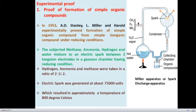What they did was very interesting. They simply exposed a mixture of methane, ammonia, hydrogen, and water to an electric spark between tungsten electrodes in a gaseous chamber having reducing conditions — that is, they exposed the mixture to high electric voltage. The hydrogen, ammonia, and methane were taken in a ratio of 2:1:2. The electric spark was generated at a voltage of 75,000 volts, which resulted in an approximate temperature of 800 degrees Celsius.